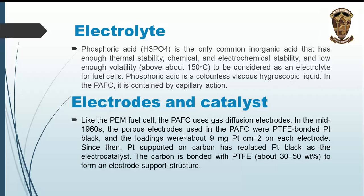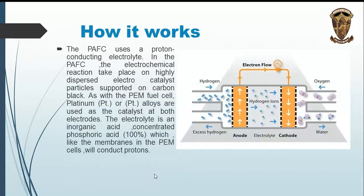Like the polymer electrolyte membrane fuel cell, the phosphoric acid fuel cell uses gas diffusion electrodes. In the mid-1960s, the porous electrodes used were PTFE-bonded platinum black with loading of about 9 milligrams of platinum per centimeter squared on each electrode. Since then, platinum supported on carbon has replaced platinum black as the electrocatalyst, with carbon bonded with PTFE at about 30 to 50 weight percent to form an electrode support structure. The electrochemical reactions take place on highly dispersed electrocatalyst particles supported on carbon black.